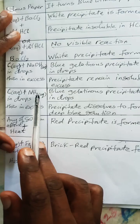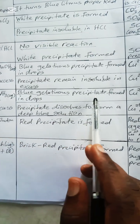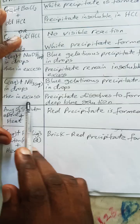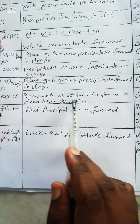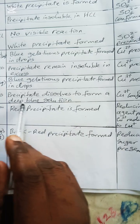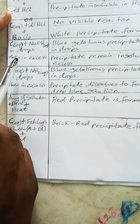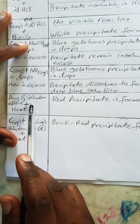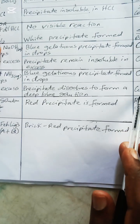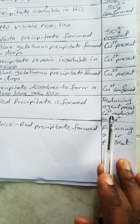Solution C plus aqueous ammonia in drops: you have the same blue gelatinous precipitate formed — don't forget 'gelatinous' — and the inference is Cu²⁺ present. Then in excess ammonia, the precipitate dissolves to form a deep blue solution — this is very important — and Cu²⁺ is confirmed. If you leave either solution for 5 or 10 minutes or heat it, the copper 2 will be reduced to copper 1 and you will see a red precipitate form, indicating a reducing agent is present.